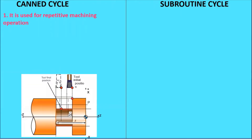Here also, one more example of grooving — if you want to groove here, this is a deep groove we can observe, and in that case you again have to go for repetitive operations. So the CAN cycle is basically used for repetitive operations. These are just a few examples shown.